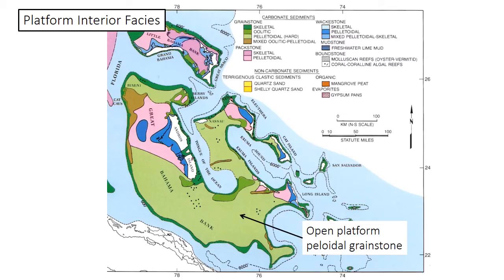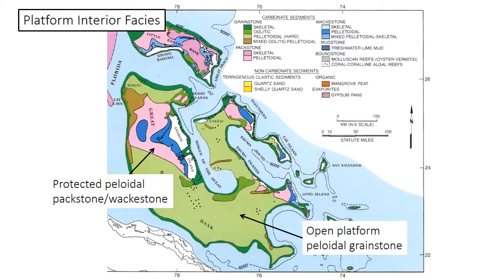In the Bahamas, the open lagoonal part of the platform can still be a grainstone — a peloidal grainstone with no carbonate mud — typical in more unprotected areas of the platform. On the lee side or downwind side of islands, where islands provide a substantial barrier against wave energy, muddier sediments like packstones and wackestones are found, though still primarily peloidal. The Little Bahama Bank really shows this classic separation of higher-energy grainstone margins surrounding a lower-energy, muddier packstone or wackestone central lagoon.